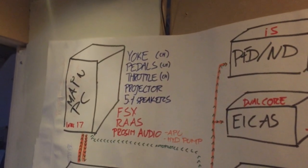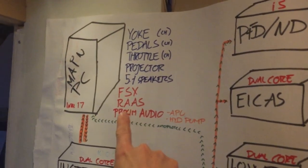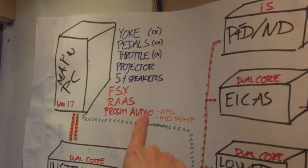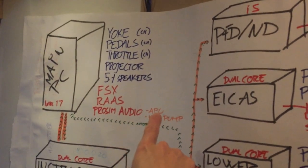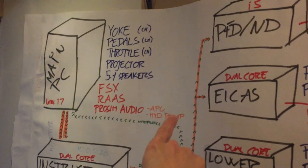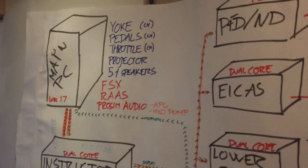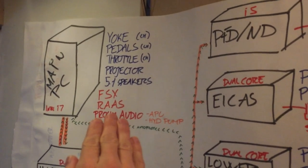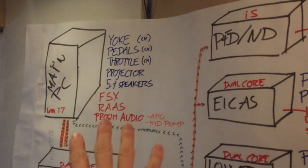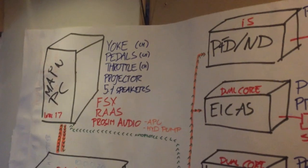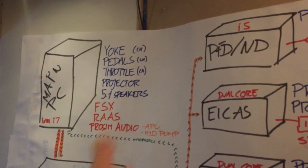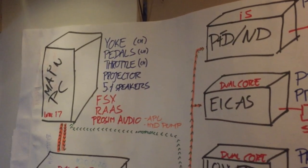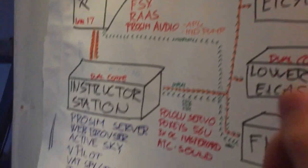ProSim Audio is a ProSim program that plays audio files. It plays the APU sound and the hydraulic pumps. The reason they are on this computer is that they should come from around the same position as the engine sounds.